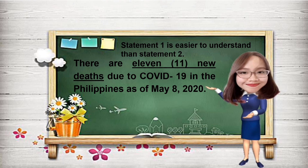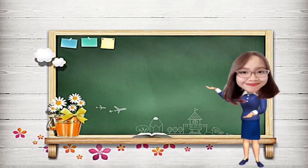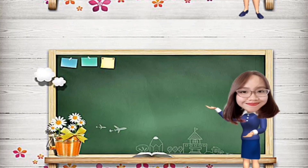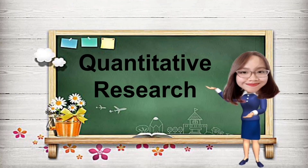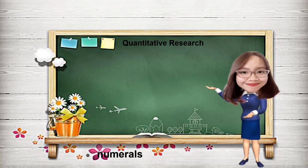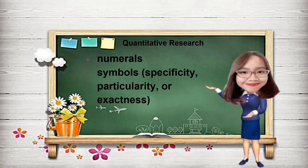Since you can now distinguish statements that provide clear and unclear information, what kind of research do you think can make you focus your mind on specific things by means of statistics that involve collection and study of numerical data? That is correct — quantitative research. Quantitative research can provide you a meaning through numerals or set of symbols that indicates a specificity, particularity, or exactness of something.